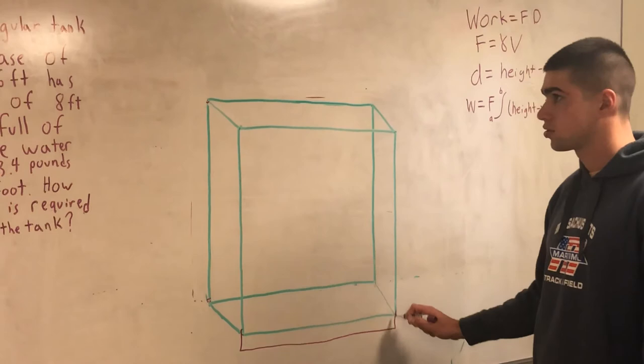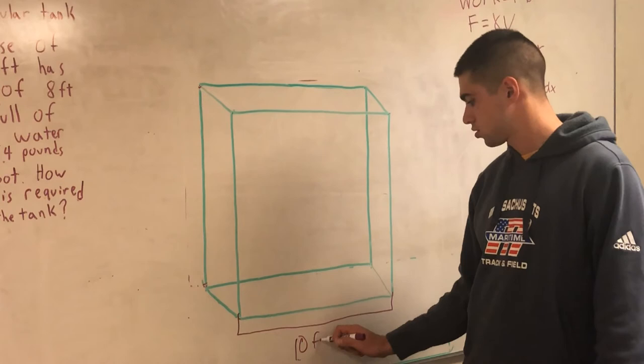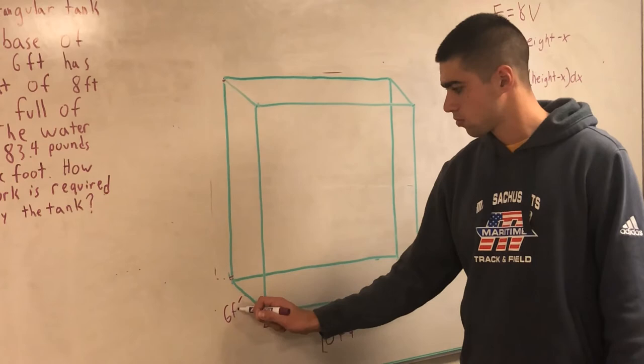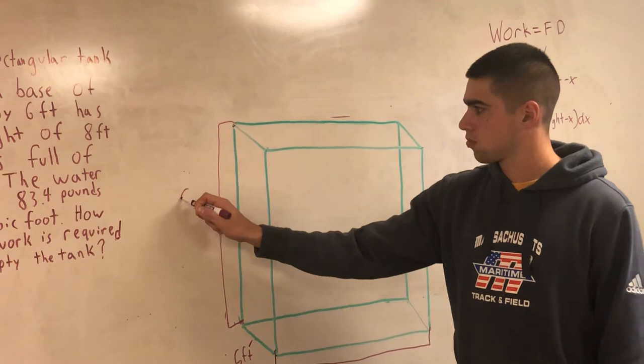Next, you draw out your rectangular tank, and you label the base, which is 10 feet, 10 feet, then your width, which is 6 feet, and your height, which is 8 feet.